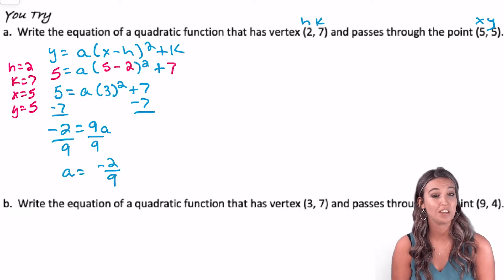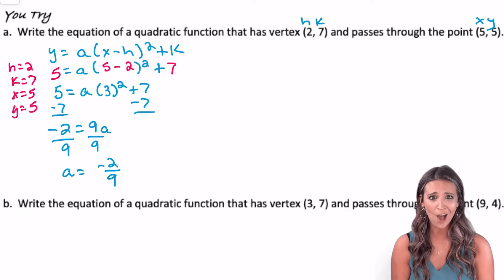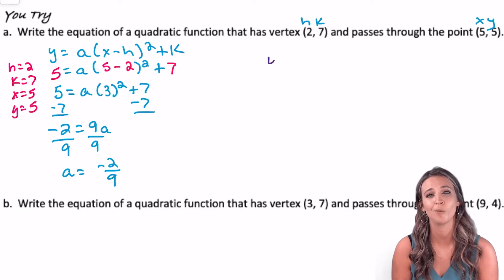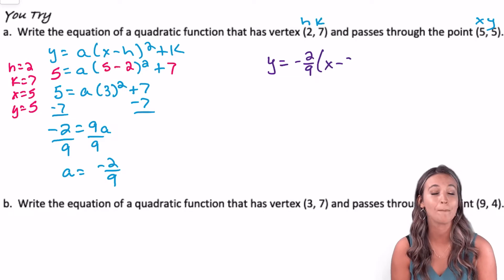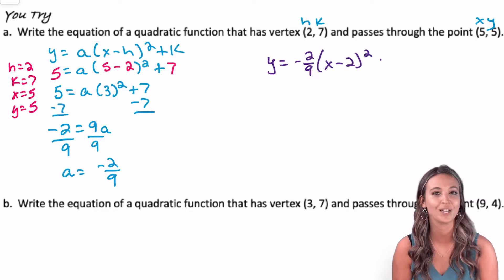A is negative 2 ninths. Is that my final answer? No. I still need to write the general form for this quadratic equation. Y equals negative 2/9 times (x - 2)² + 7.